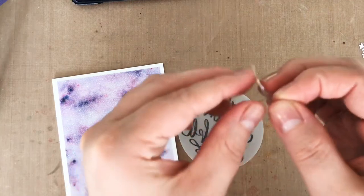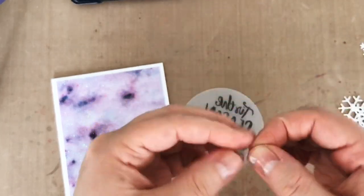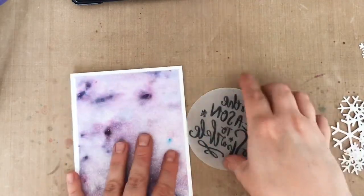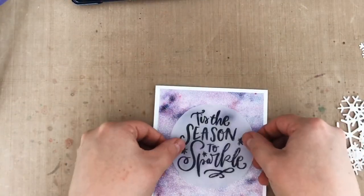Then I just place them strategically behind parts of that stamped sentiment so they won't be seen. And they'll just hold that circle down until I can secure it more completely with the snowflake die cuts on top, which, like I said, are basically stickers now.